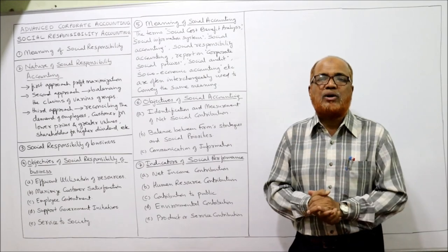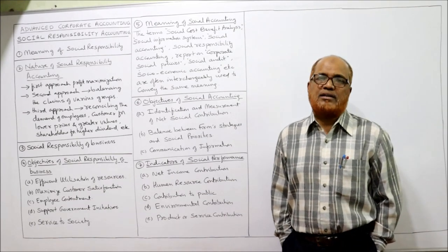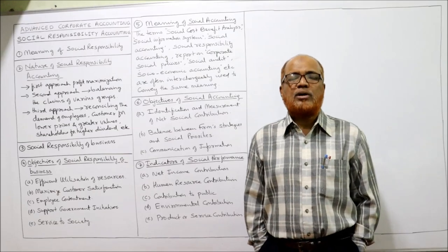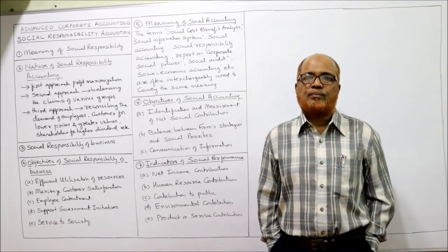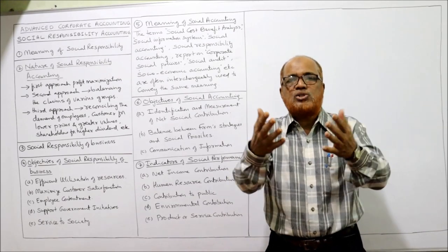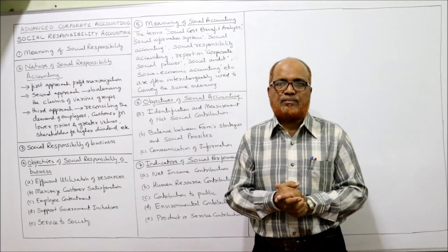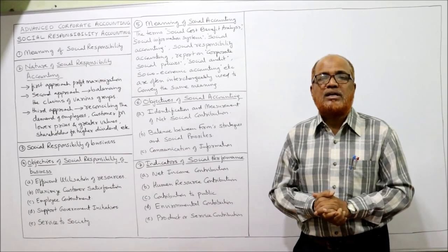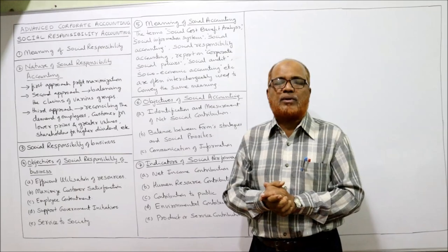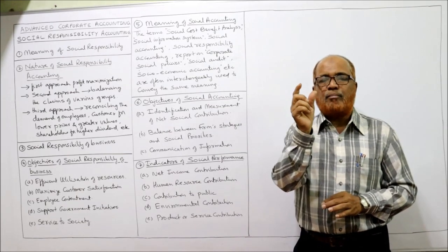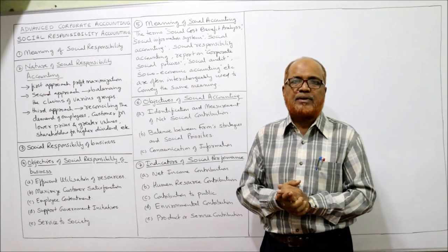First of all, business is a part of society. Particularly a corporate — nowadays the important business organization is companies, a corporate organization which is an artificial person created by law. As natural persons have responsibilities towards society, similarly a business organization, particularly a corporate form, will have more responsibilities. The main objective still is to earn profit, but a business cannot survive for long if profit maximization is the sole objective.